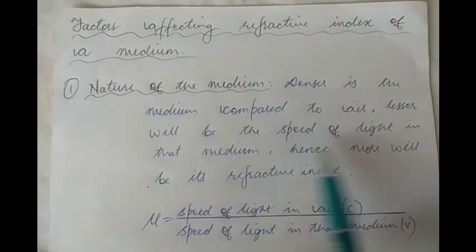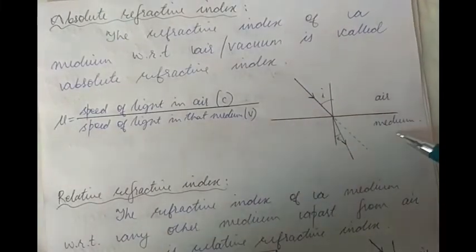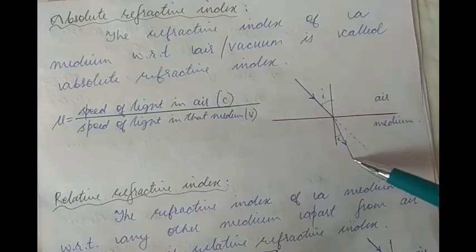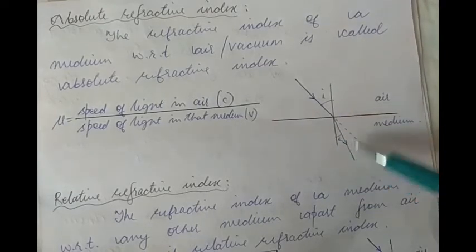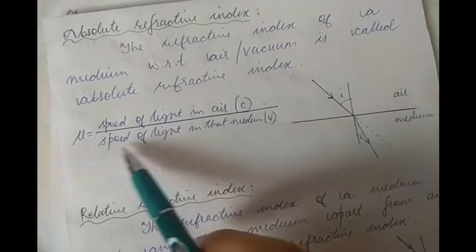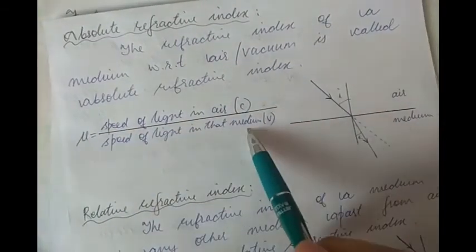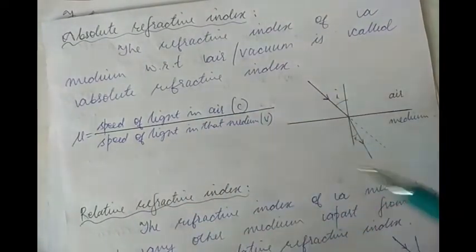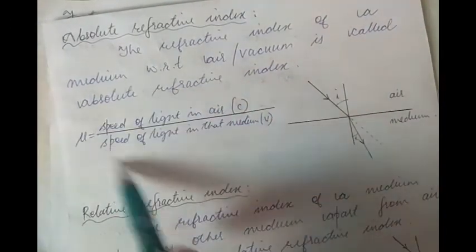Denser is the medium compared to air, lesser will be the speed of light in that medium, hence more will be the refractive index. The denser the second medium is compared to air, the more difficult it will be for light to pass through it — the speed of light decreases and it bends towards the normal. Since the speed of light in the medium (the denominator) is decreasing, and the numerator is unchanged, the whole fraction mu increases.